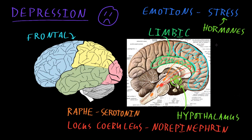Then there's a pathway that starts with an area called the ventral tegmental area, or VTA for short, located in the brain stem, which also sends long axons up to different areas of the cerebrum. The ventral tegmental area supplies much of the dopamine to the brain. These neurotransmitter systems affect function in many parts of the brain, including the frontal lobes and the limbic structures. Supporting the idea that abnormalities of these systems are involved in major depressive disorder is the fact that medications that affect dopamine, norepinephrine, and serotonin often improve the symptoms of major depressive disorder.